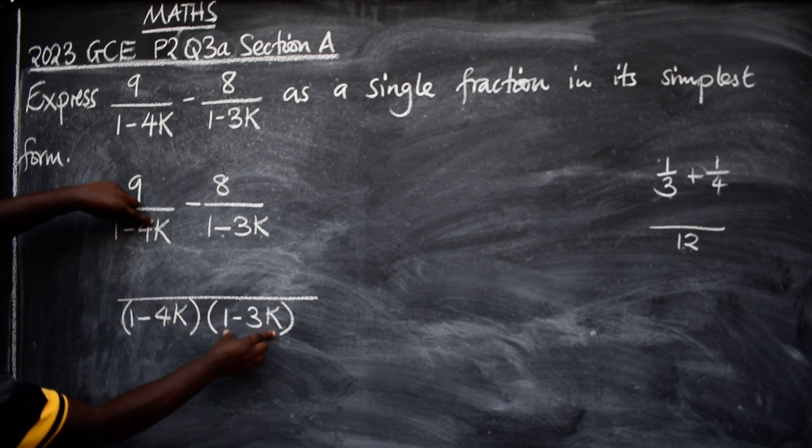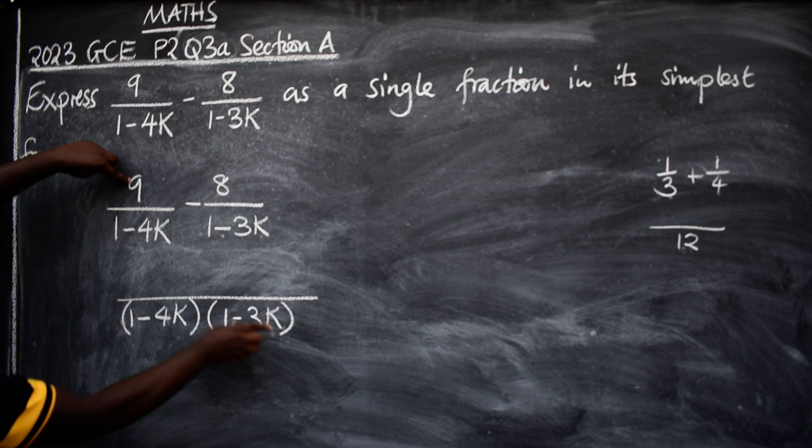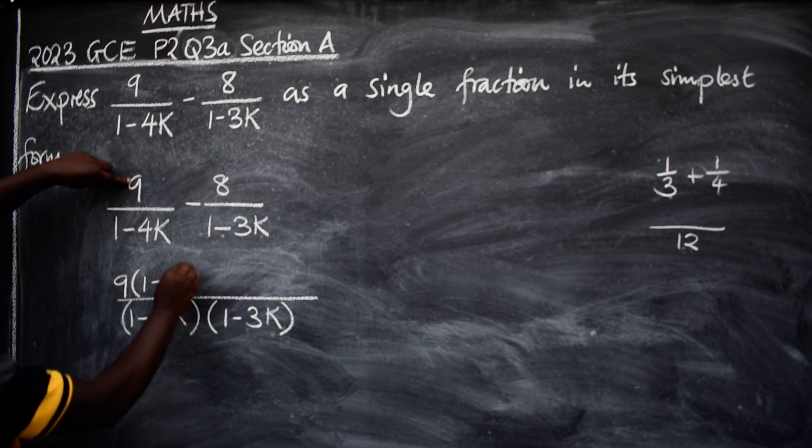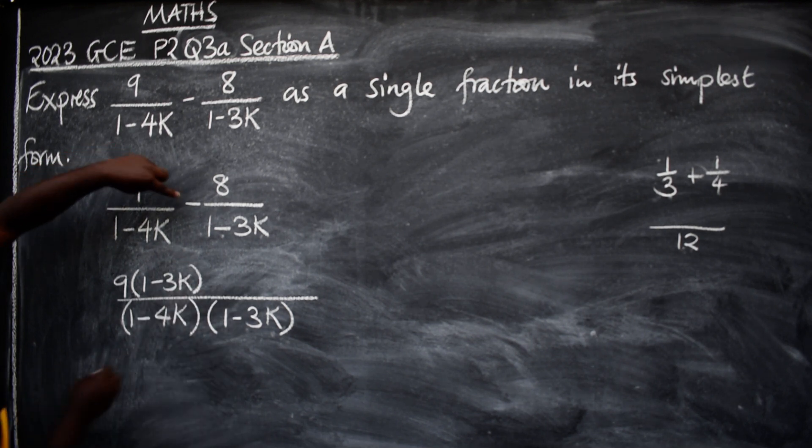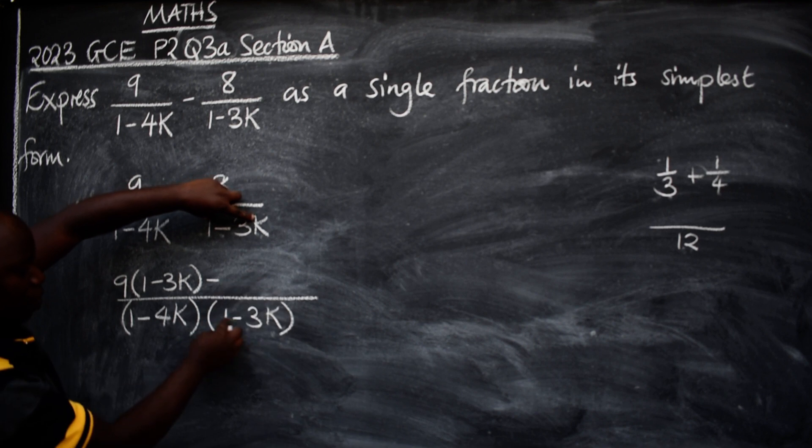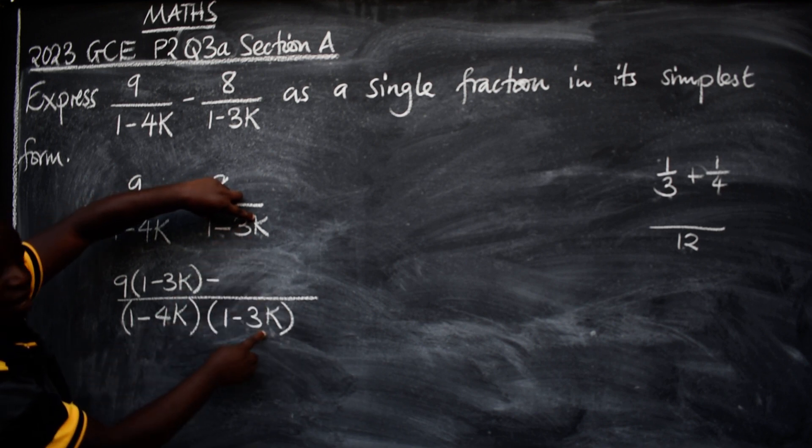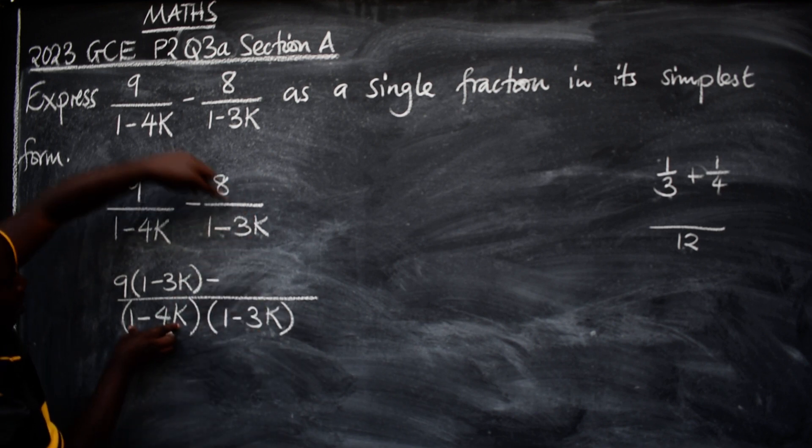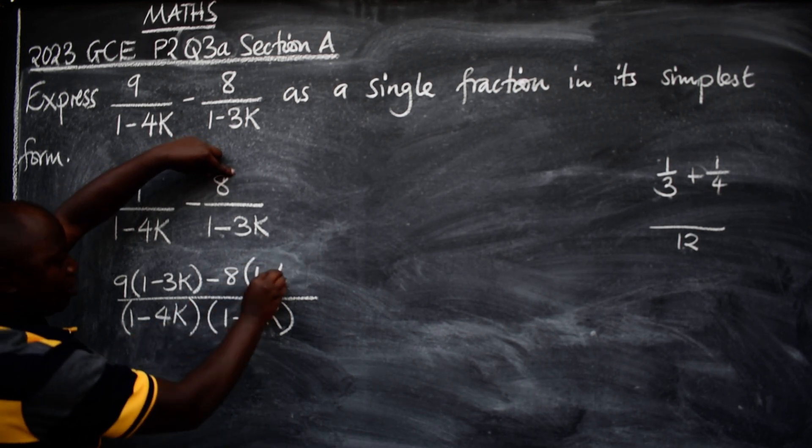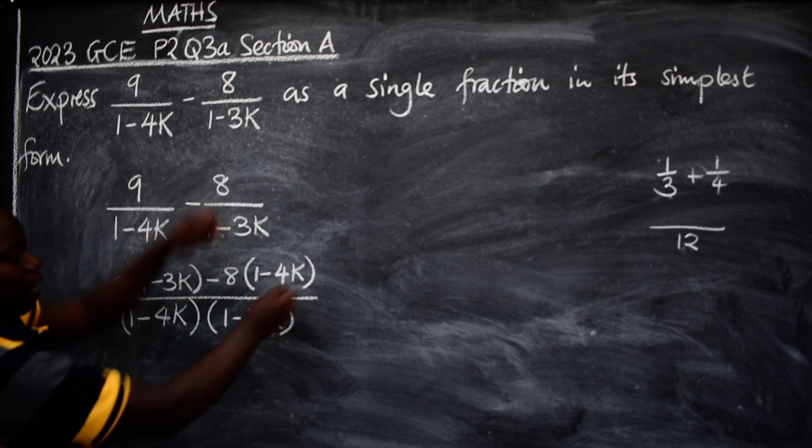This into this is 1. What you remain is this multiplied by this, so you write 9 multiplied by 1 minus 3k, like this, minus here. You do the same: 1 minus 3k into 1 minus 3k, this will give us 1. What you remain is this, then this times 8, so you write 8 here, then 1 minus 4k like that.